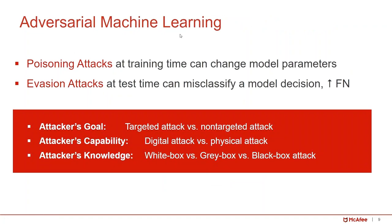There are two types of attack in this concept. One is called a poisoning attack, which happens at training time — this type of attack can change the model parameters because the attacker can change the training data. The second type is called an evasion attack, which happens at the test or inference phase. The attacker can manipulate your test sample so that it can evade detection or cause misclassification of prediction results.